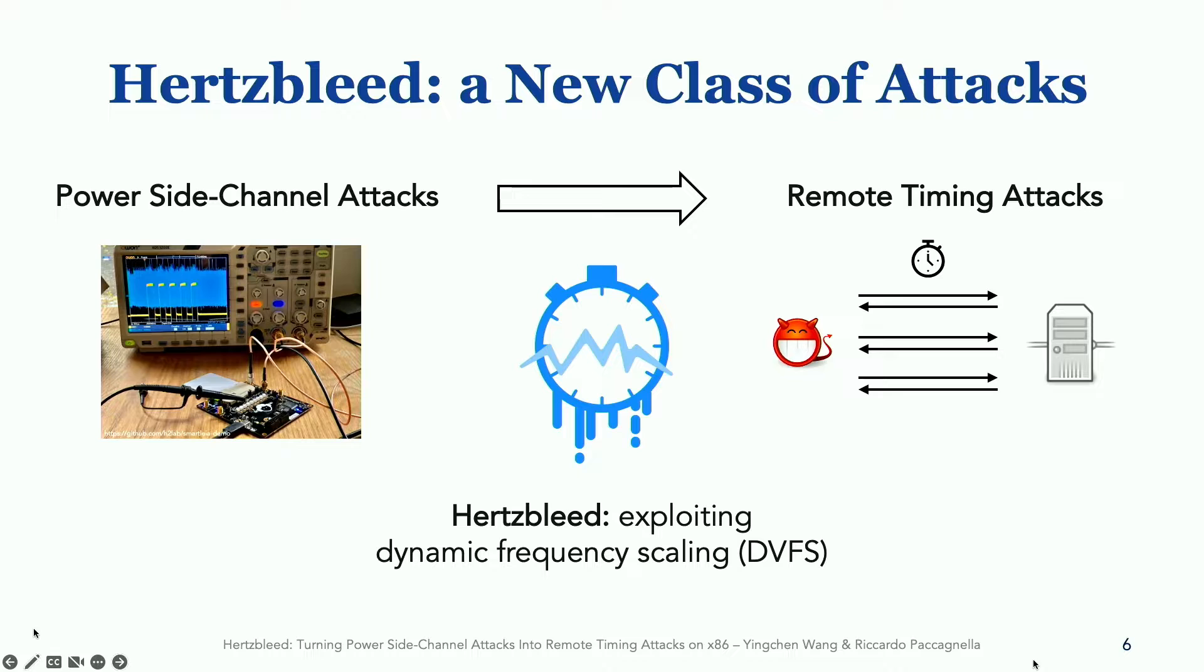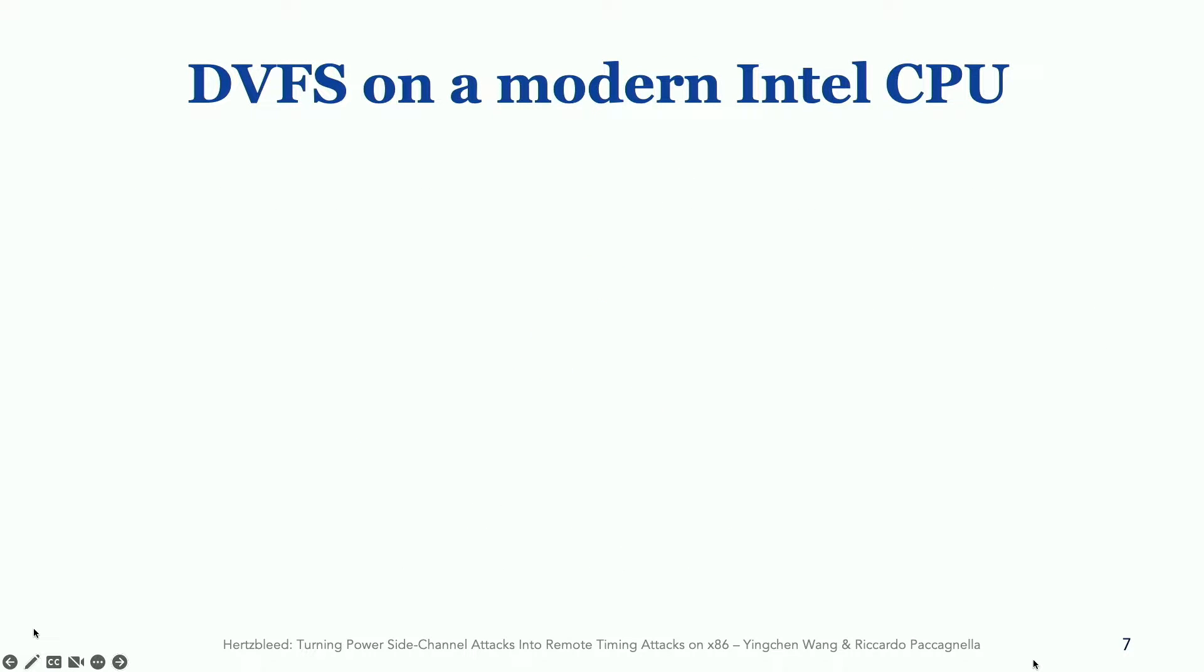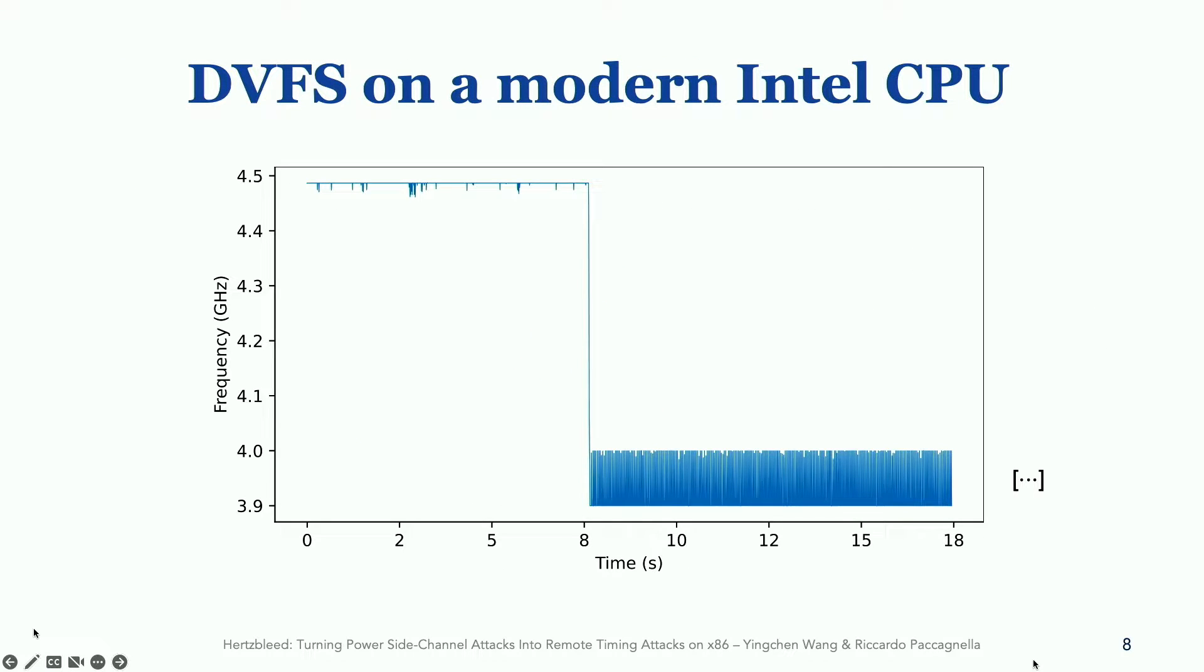Let's start by looking at DVFS on a modern Intel processor. When we run a workload on a modern Intel processor, this is what the frequency trace looks like. As you can see, the frequency of the processor starts at around 4.5 gigahertz. This is what we call the max turbo state, and it can last for about eight seconds. After eight seconds, however, the processor hits a certain thermal limit, and the frequency has to scale down to 3.9 to 4 gigahertz. The second part of the plot shows this second state, which is called steady state, and this will last until the duration, until the workload completes.